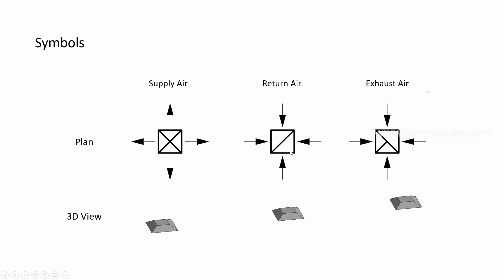If you see the difference in the middle: return air will always have a symbol like a square or rectangle shape with a diagonal line. Exhaust has an additional line connecting the diagonal line. For supply, it will be a cross line. You have to remember these shapes and arrow directions. In 3D, all look similar — it will be based on the family created in the project.